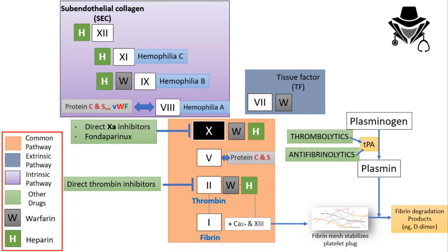Looking at our completed diagram: both heparin and warfarin affect factors 2 and 10. However, heparin affects most if not all of the intrinsic pathway — factors 12, 11, and 9 — but not factor 8, possibly because factor 8 is protected by von Willebrand factor. Warfarin is mostly concerned with the extrinsic pathway, affecting the one and only factor 7, with only a slight effect on the intrinsic pathway.